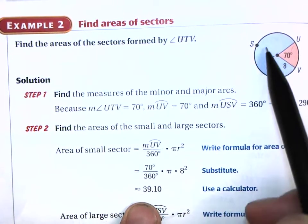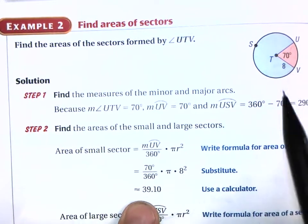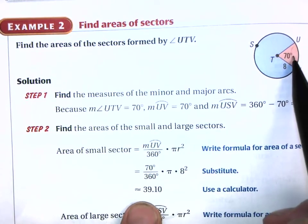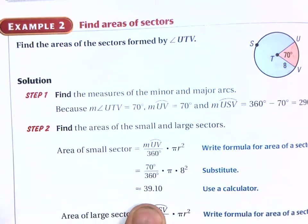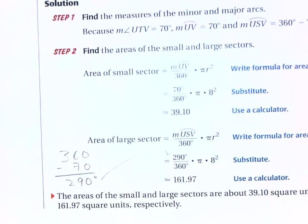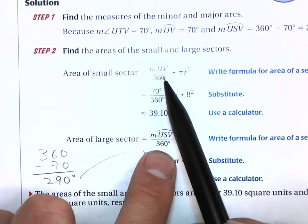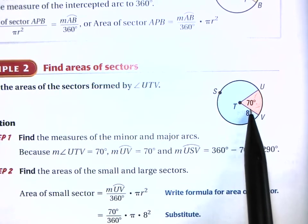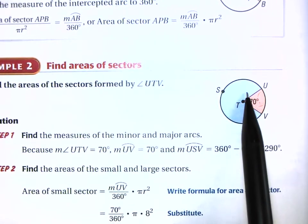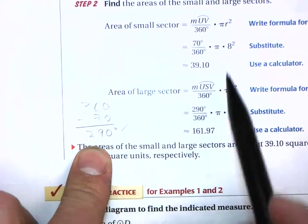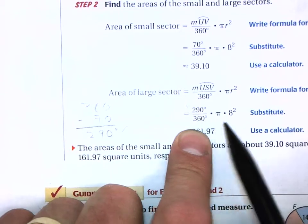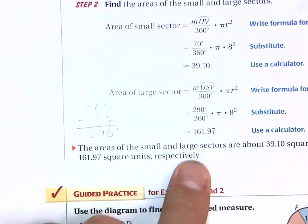They also ask for the area of the rest of the circle. One way is to find the total area of the circle and subtract the sector area you just found. Another way is to use the same formula with the central angle of the remaining part: 360 minus 70 equals 290 degrees. So use 290 over 360 times the area of the entire circle, and that gives you the remaining area.